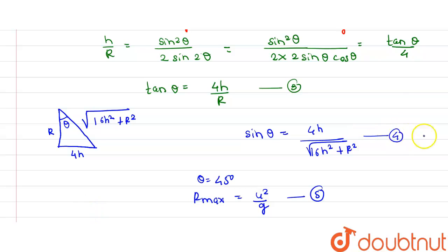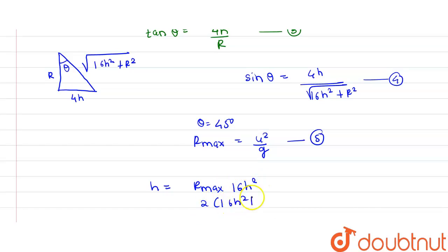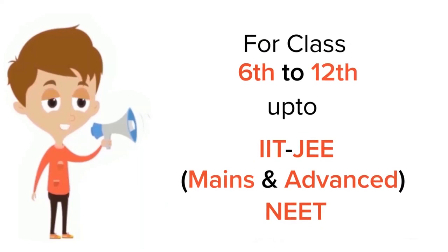From equations 1, 3, and 4, we get H = R_max × 4H × 16H² / (2 × (16H² + R²)), and working through the algebra, the maximum range R_max is equal to 2H plus R² upon 8H. This is the required answer.